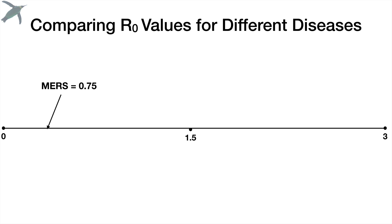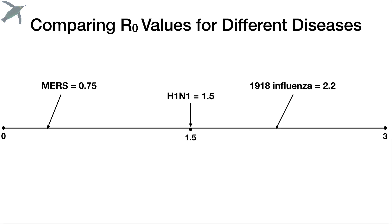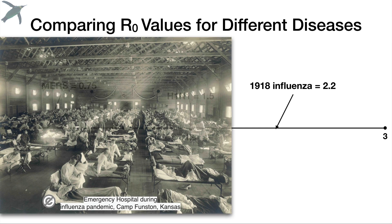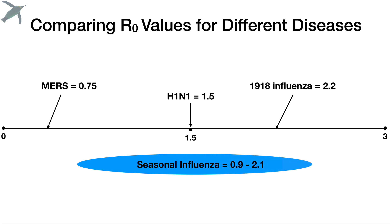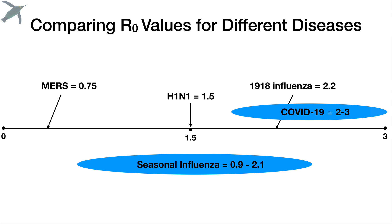MERS has an R-naught of 0.75, and maybe now you can see how that disease kind of fizzled out over time — the R-naught is less than one. H1N1 — the 2009 influenza pandemic — had an R-naught of about 1.5. The 1918 influenza pandemic had an R-naught of 2.2; that was also an H1N1 virus with genes of avian origin, lasting from January 1918 to December 1920, with an estimated 500 million people infected — about a third of the world's population — and roughly 50 million deaths, likely underreported. Seasonal influenza ranges between 0.9 and 2.1, and COVID-19 is coming in at between 2 and 3, a number expected to drop as more global testing is done.